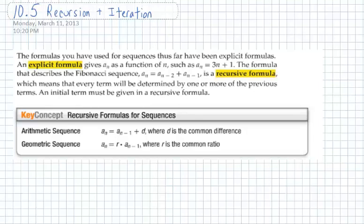This will be the last section we do in Chapter 10. It deals with recursion and iteration. In the first couple sections of this chapter, we've been dealing with explicit formulas, which pretty much means that we could find any term in the sequence, no matter if we had the term before it. We could find A sub 100 as long as we knew what the common difference was or what the common ratio.